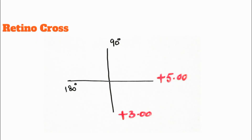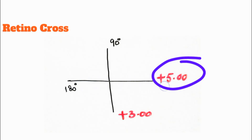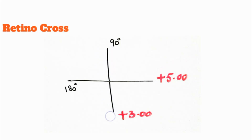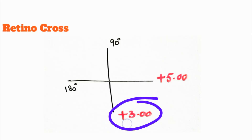For example, a patient comes to you and while you are doing the retinoscopy, you find that in the horizontal meridian or 180-degree meridian the patient gets neutralized with a plus 5 spherical lens, and the 90-degree vertical meridian was neutralized with a plus 3 spherical lens. These are the lenses at which the meridians got neutralized.